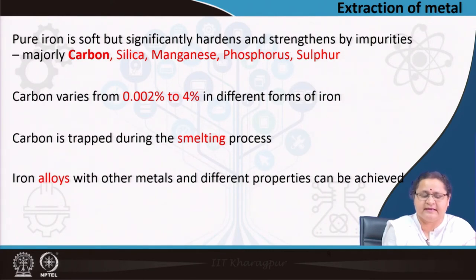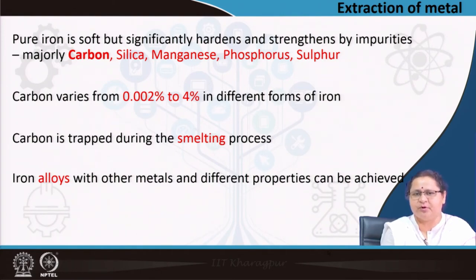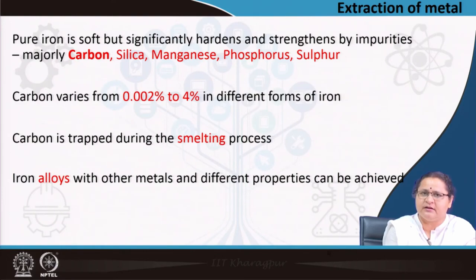By varying the carbon proportion, you get different types of iron. This carbon is trapped during the smelting process. All metals can alloy with other metals — I discussed this in lecture one — and you can get various properties. Another advantage of metals is that you can treat them with heat and get different properties. So heat treatment can be done, alloying can be done, and different carbon percentages can be considered to get a large variety of iron.